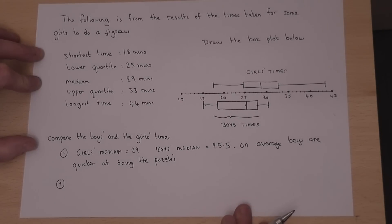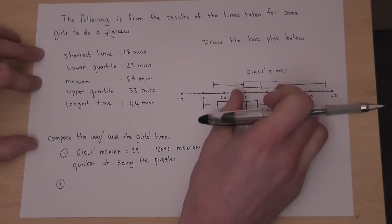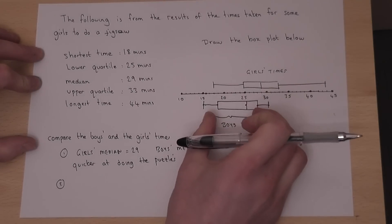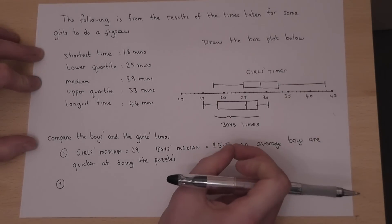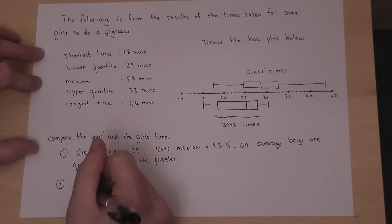The second comparison is on the spread of the data. And this can be done by looking at what's called the interquartile range. And this looks at the width of the box, which shows how spread out the average girls are and how spread out the average boys are.